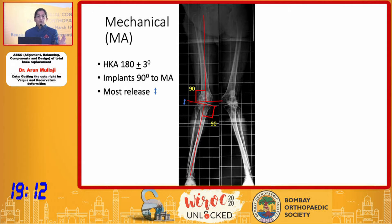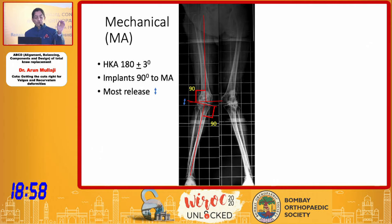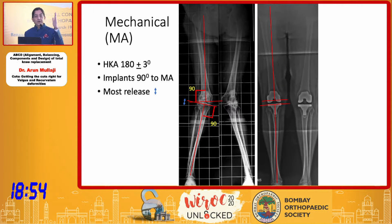If you're sticking to mechanical alignment, you aim for 180-degree alignment in a valgus knee, placing your implants 90 degrees to the mechanical axis of the femur and tibia. As the blue arrow shows, you'll have to do a substantial release in order to get your alignment correct. So alignment and balance using mechanical alignment with cuts at 90 degrees will require significant releases.